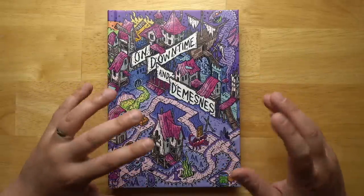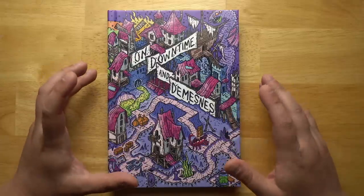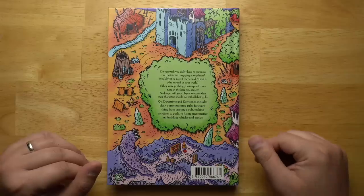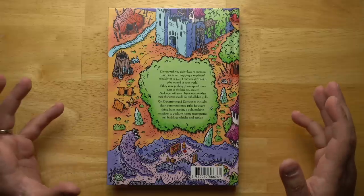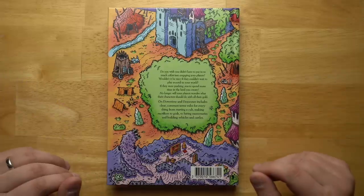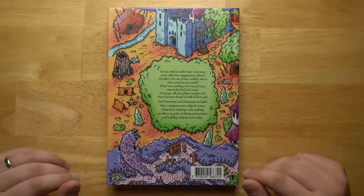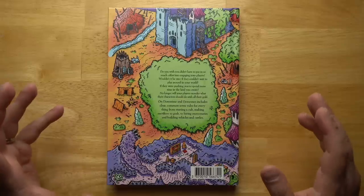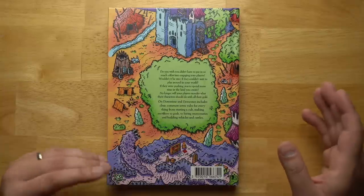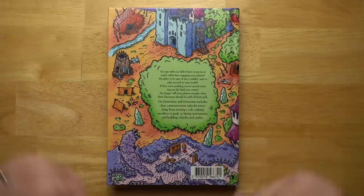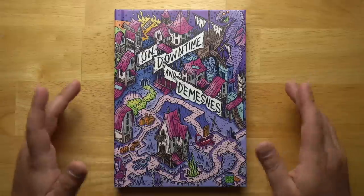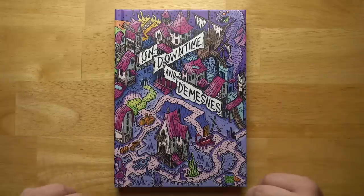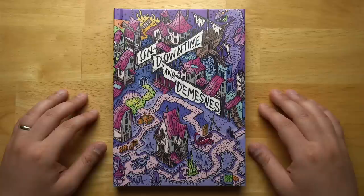When players want to do things like set up a side business or earn money fighting in an arena, you don't have to make something up on the fly. You can use one of the many little subsystems in this book. The book is written by Courtney Campbell, and one fun thing is that if you look at the initials, it's OD&D, which is a theme that we will be seeing in several other of Courtney's books going forward.